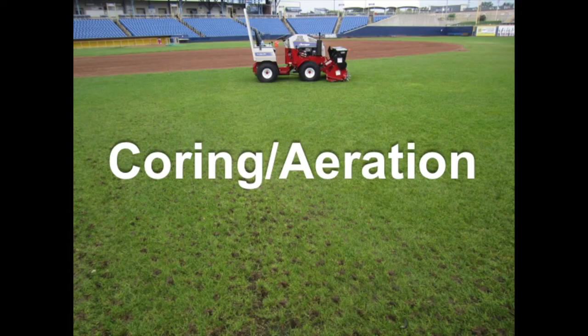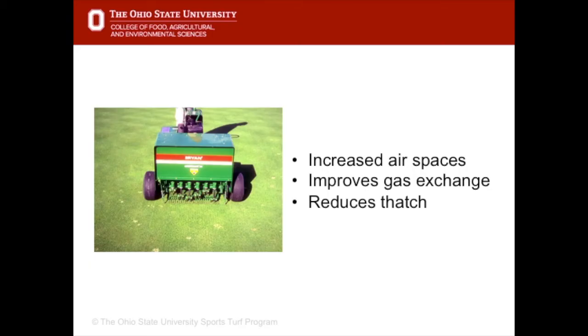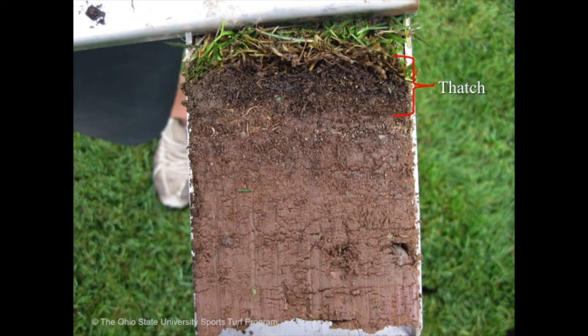Coring is a mechanical means of relieving compaction by providing holes or channels to improve air movement into and through the soil. Coring increases air spaces, improves gas exchange, and helps reduce thatch. Thatch is a layer of organic material between the soil and the plant that can become spongy and hold water. Coring helps to break that up.